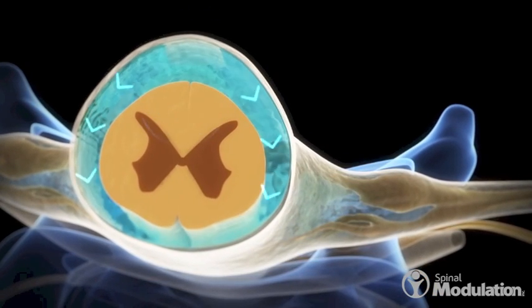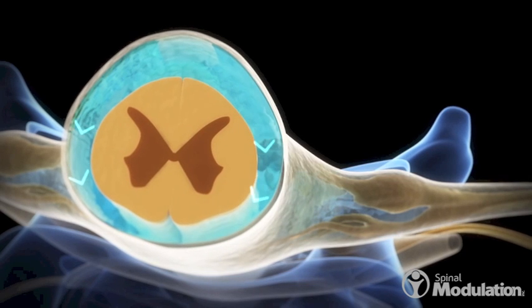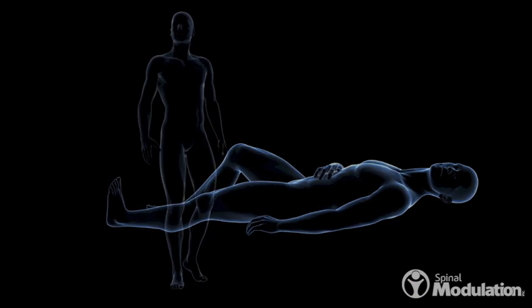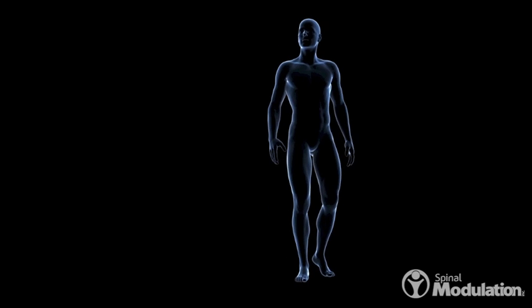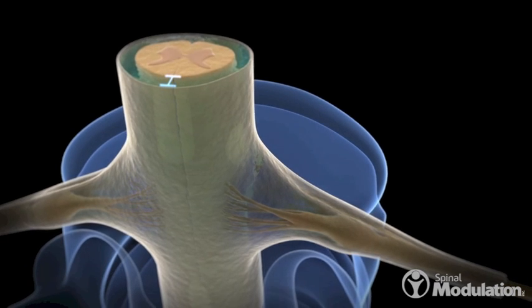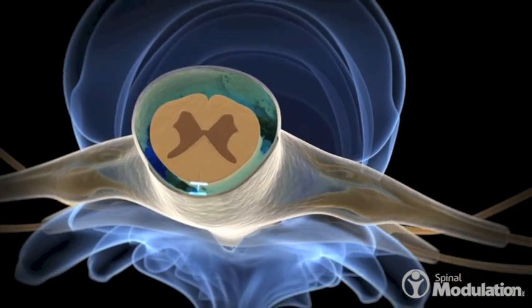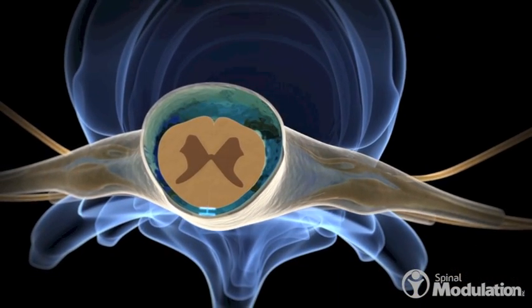With dorsal column stimulation, body movement such as lying down or standing up may result in uncomfortable stimulation. This happens because the depth of CSF varies with positional changes, causing fluctuations in stimulation intensity.